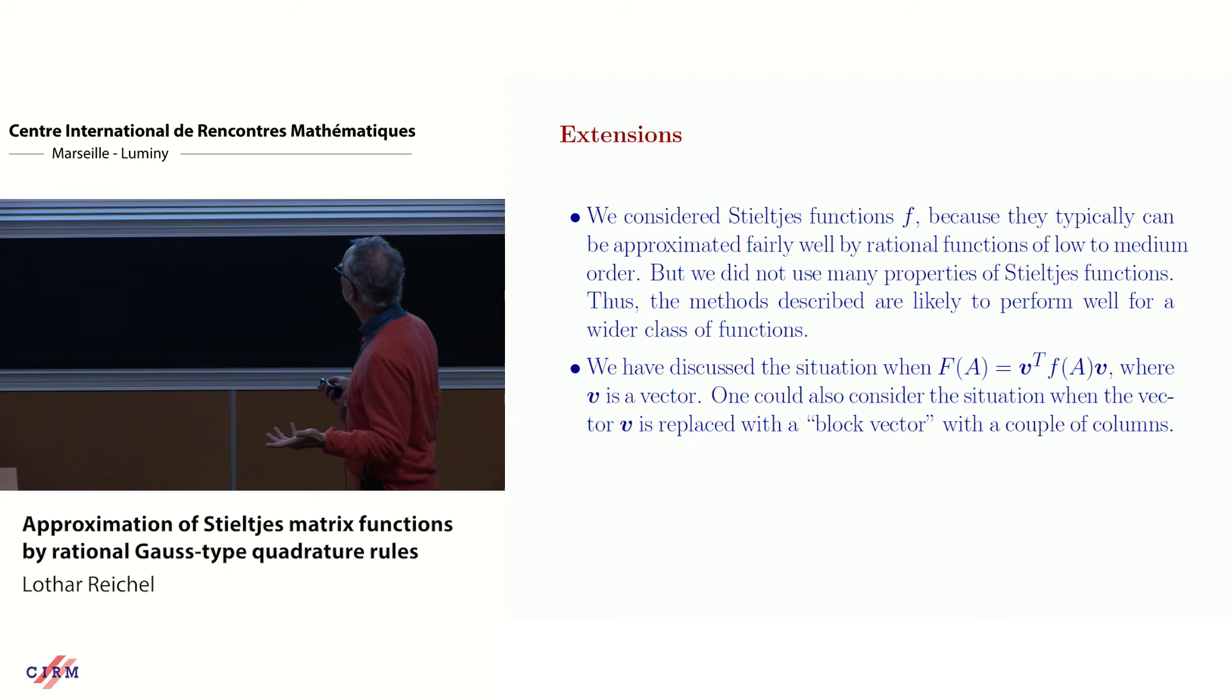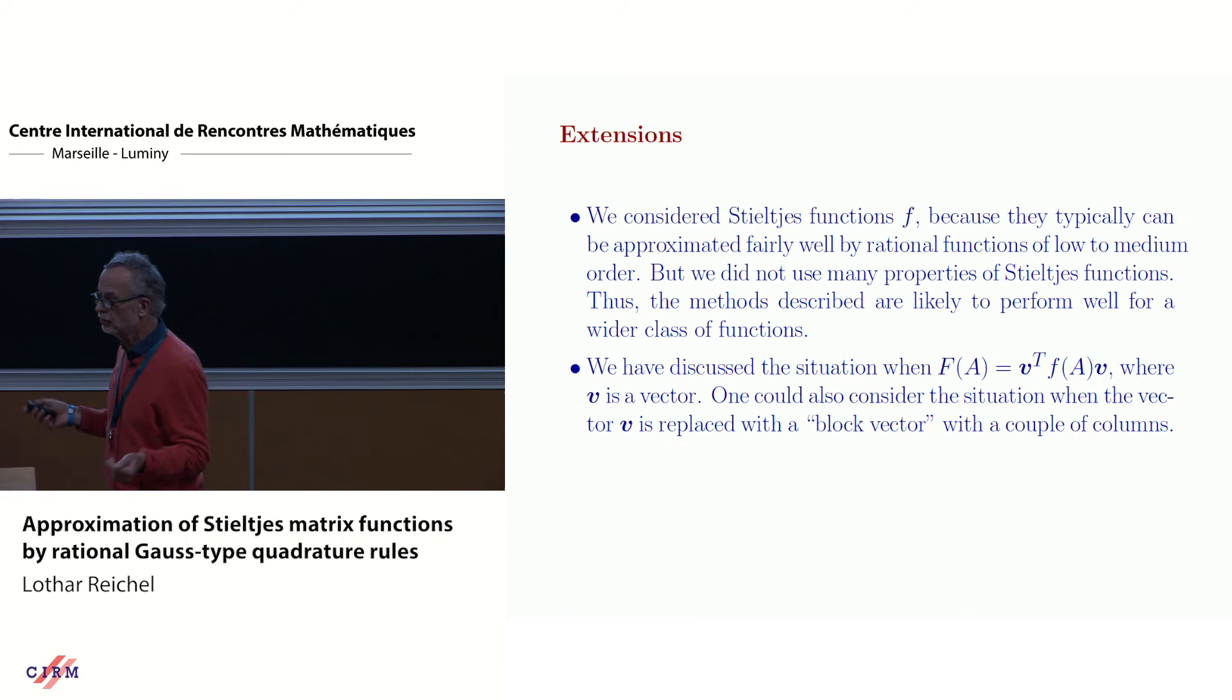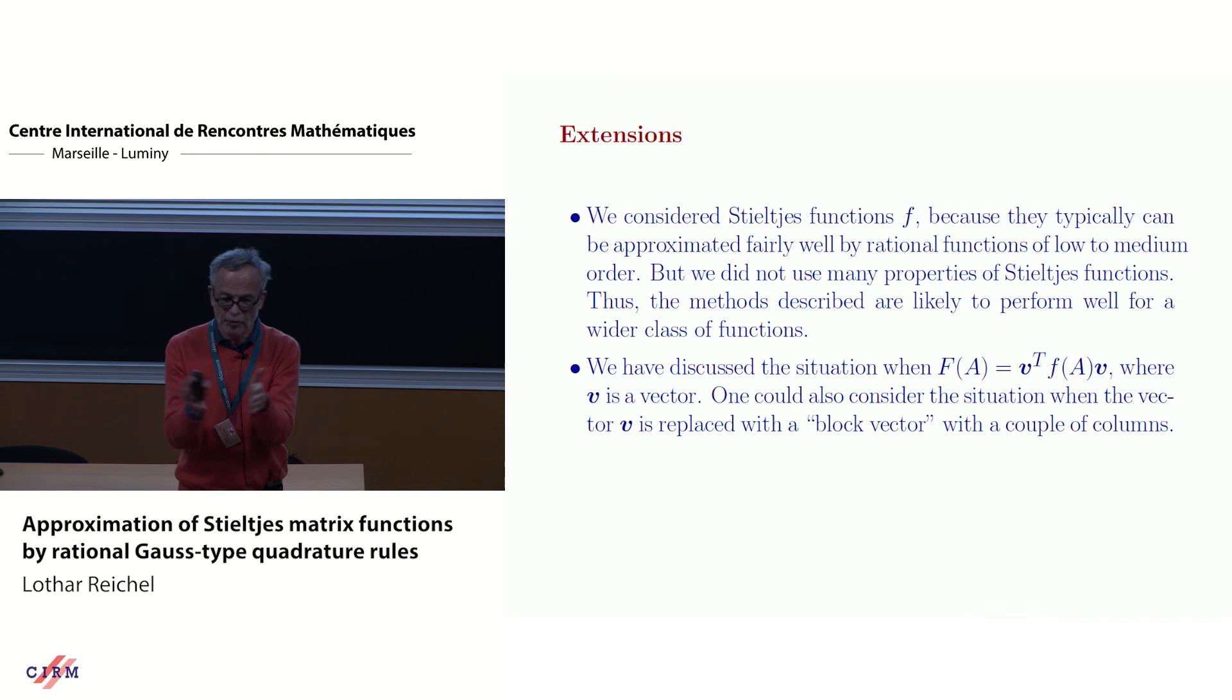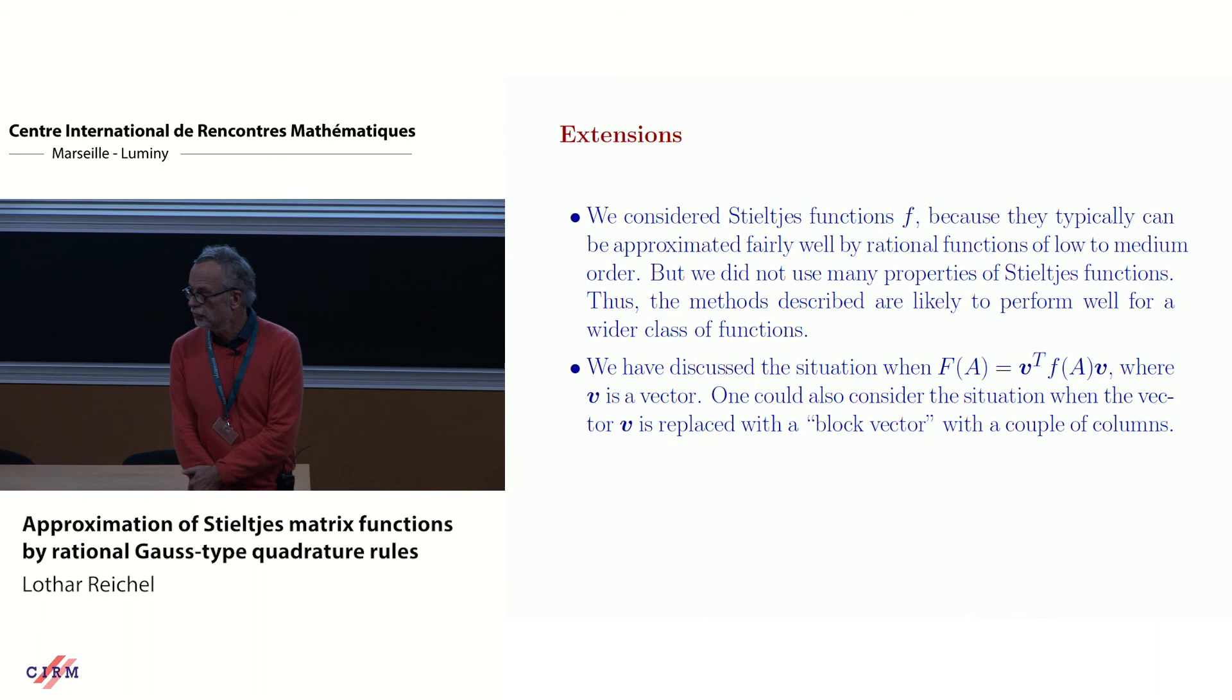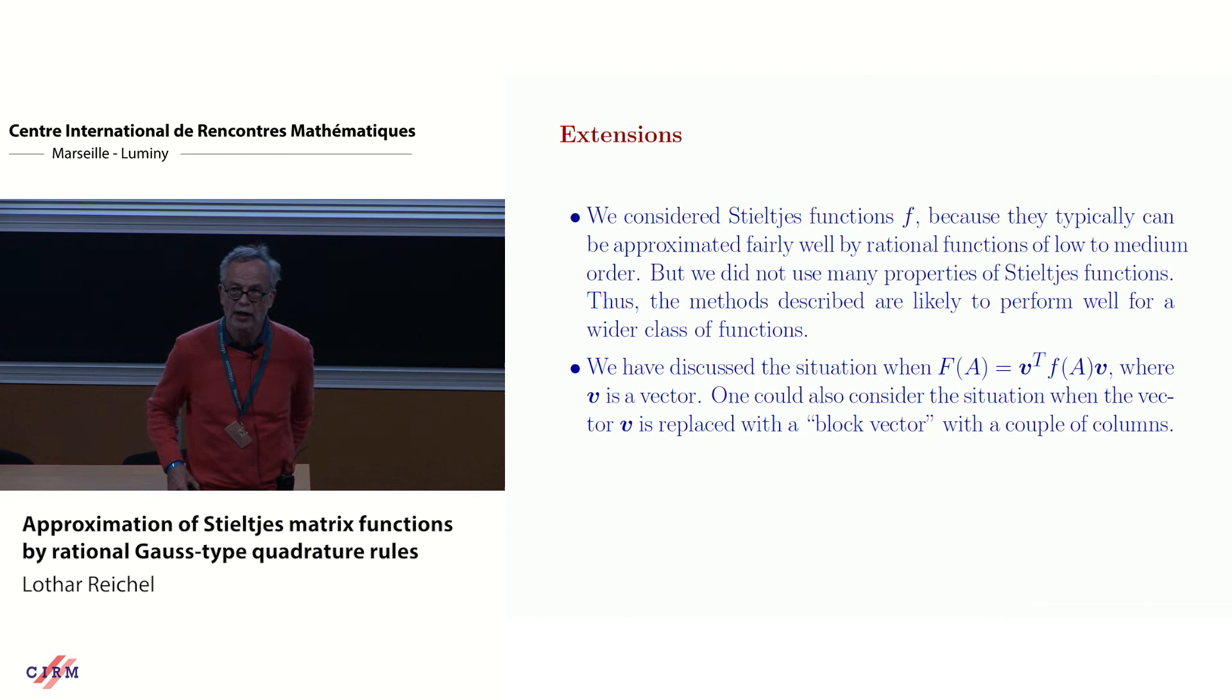One thing I was going to say is, some people in the audience like block methods. And this is when you replace vector v by a block column. So you replace v with a couple of, with a matrix with a few columns, not too many. And then you use block-Lanczos instead. And it works. There's nothing more to be said about it. The other comment is that I used Stieltjes functions here because it's natural to approximate them by rational functions. But I haven't really used many properties of Stieltjes functions. So what I'm telling you here works for a large number of functions, which are well suited for approximation by rational functions, but they don't have to be Stieltjes functions. Thank you.